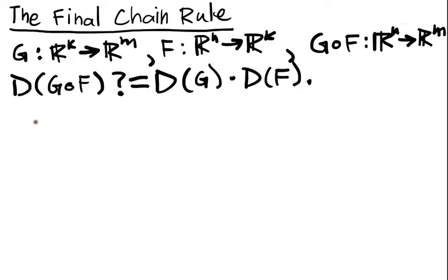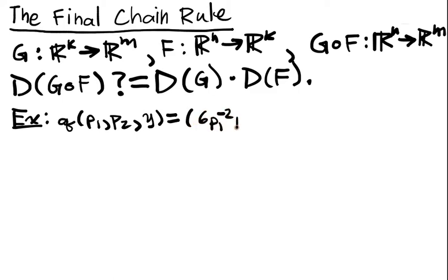So we're going to first examine a simple case, where essentially n here will be 1. So let's use the q from last time. We have q of (p1, p2, y) is equal to (6p1^(-2)p2^(3/2)y, 4p1p2^(-1)y^2).